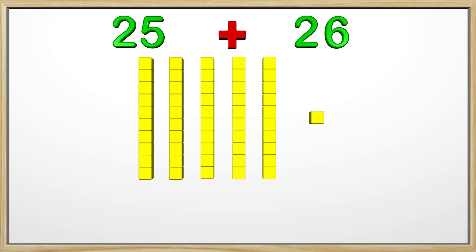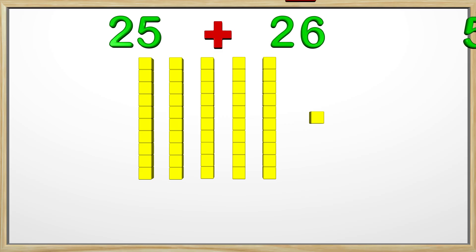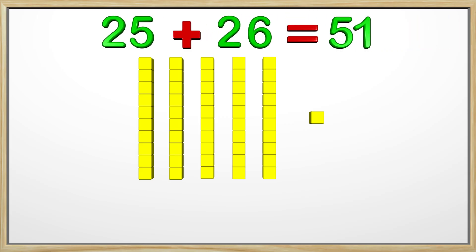Let's count how many tens we have. We have 5 tens blocks or 50. How many ones blocks are left to count? Just 1. So the answer is 51. 25 plus 26 is 51. Great job guys!